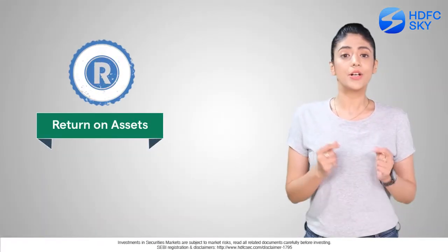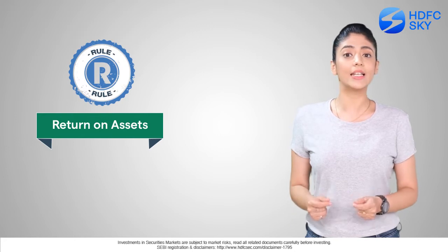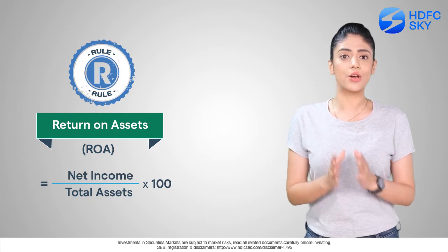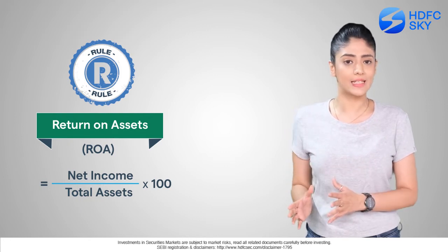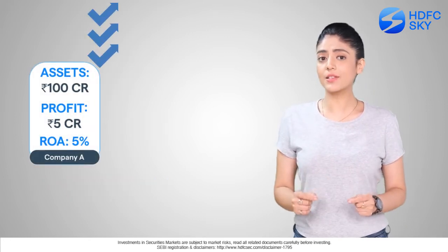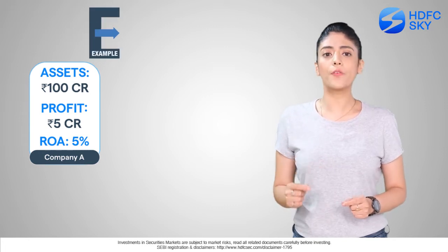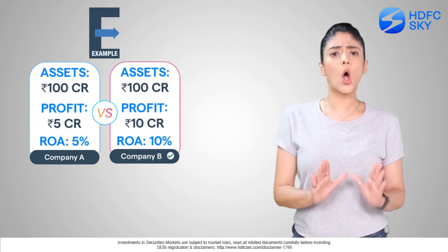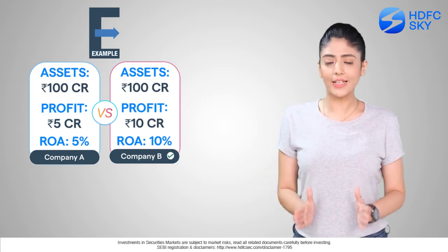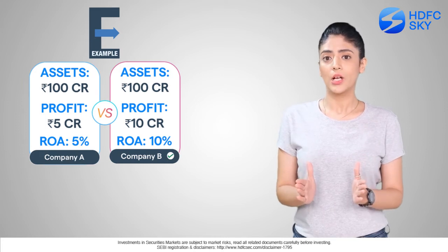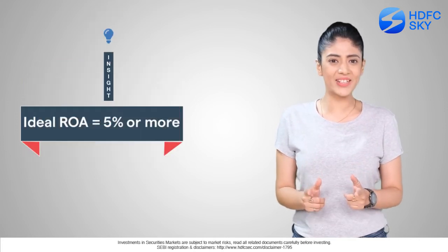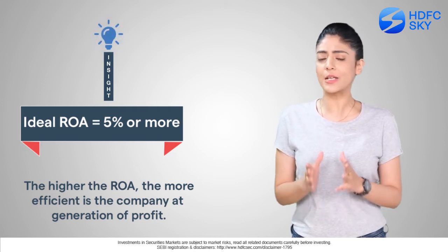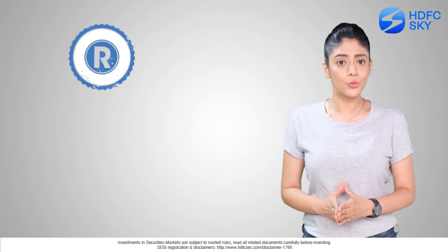Number one: Return on Assets, yani ki ROA. ROA measures a company's ability to generate income from its assets. For example, Company A has 100 crore rupees in assets and a profit of 5 crore, while Company B has the same 100 crore in assets but makes a profit of 10 crore. So Company B is better — higher ROA reflects better efficiency at generating profit.